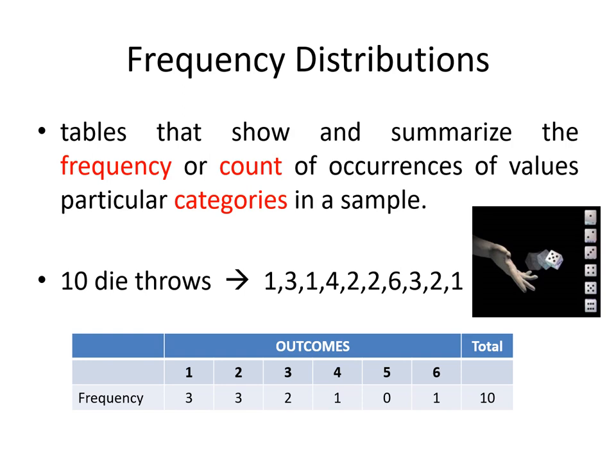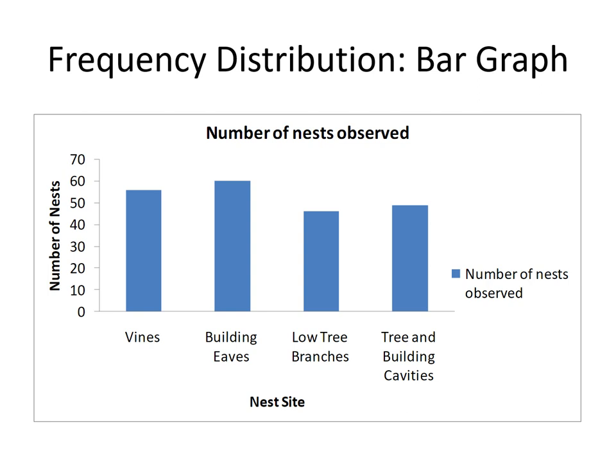If we represent the data as a bar graph, it might take you just 0.5 seconds to realize that nests found on building eaves are the most numerous among the four categories. When you do a bar graph, make sure that the bars are of equal widths — that is quite important because you're trying to prevent the creation of false impressions. Also, when making a bar graph, make sure that it starts at zero.